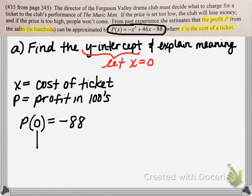Remember, we were substituting in 0 in place of x, and x was the cost of a ticket. So we're saying that if a ticket costs $0 — in other words, letting people in for free — then we have an output of negative 88. That means the club is actually going to be losing money because we have a negative value. And remember, this is not negative 88 dollars, but rather negative $8,800. So if the cost of a ticket is $0, the club will be losing $8,800.